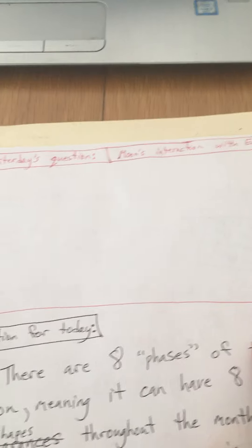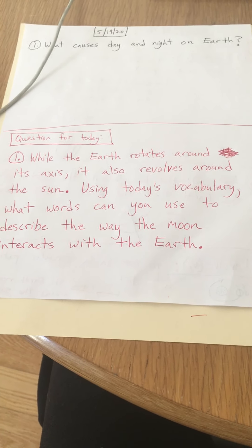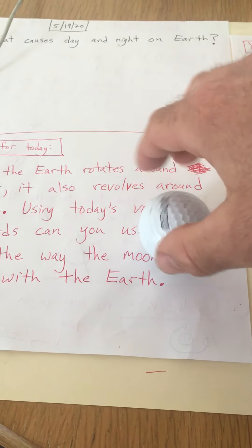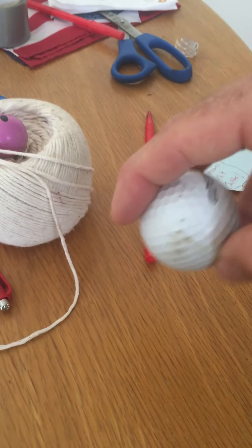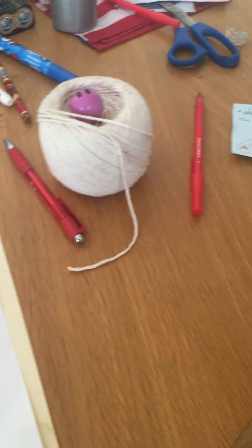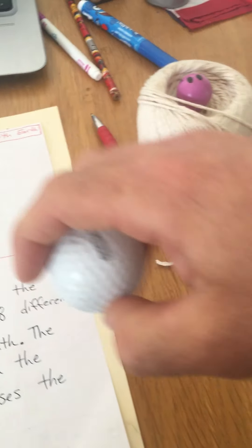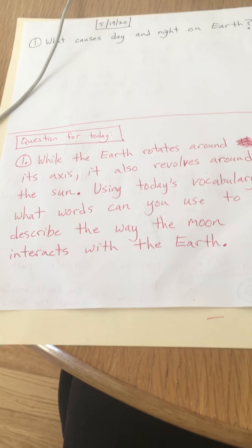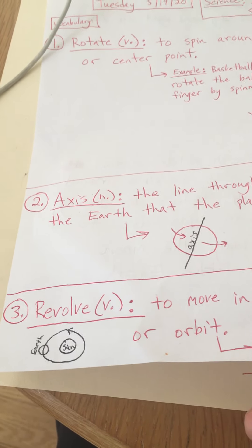Now let's go to yesterday's question about the moon's interaction with Earth. While the Earth rotates around its axis, it also revolves around the sun. As it rotates, it spins on its axis — like a basketball — and it also revolves around the sun. It takes one day to spin around, and 365 days, or one year, to revolve all the way around the sun. Yesterday's vocabulary words were rotate, axis, and revolve.